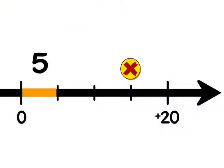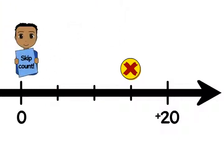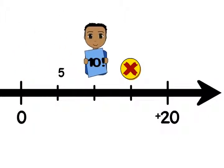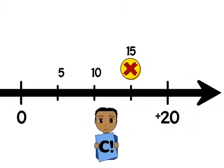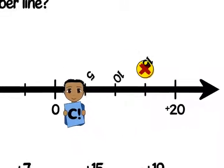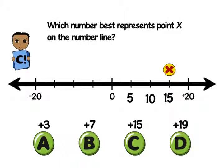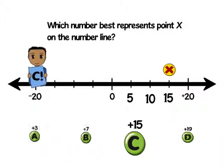We're almost done. What's the last step? Skip count by 5 from 0 to 20 to label the marks. I get it now. Each mark is 5. So point X is at positive 15. The best answer choice is C, 15.